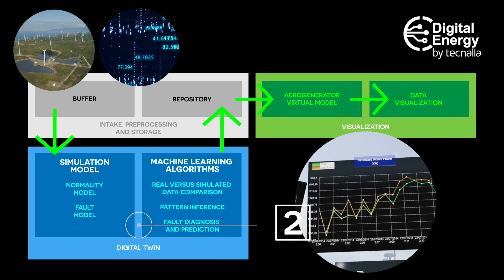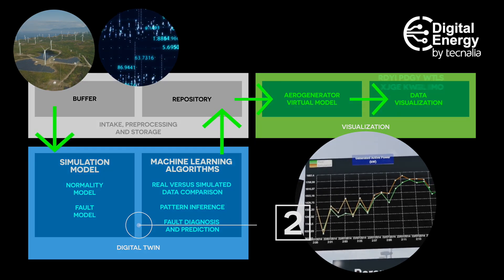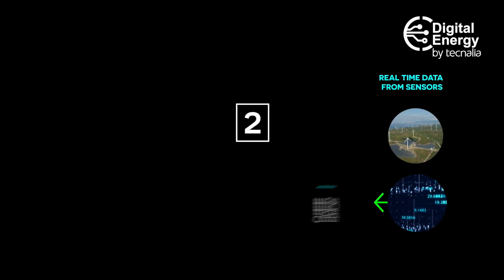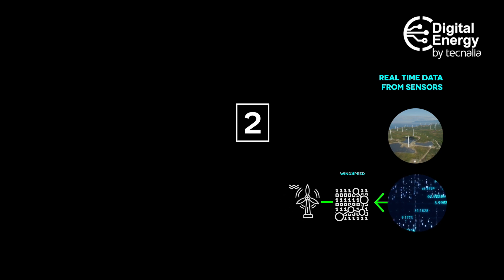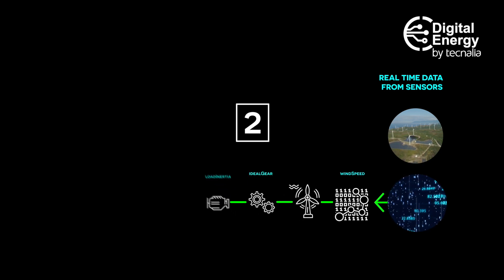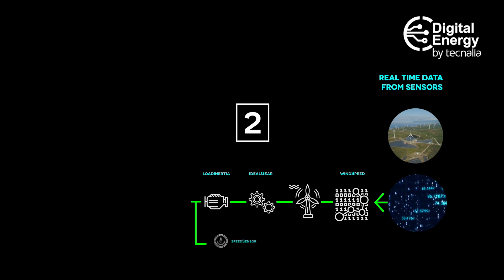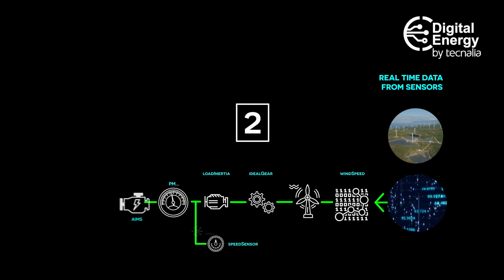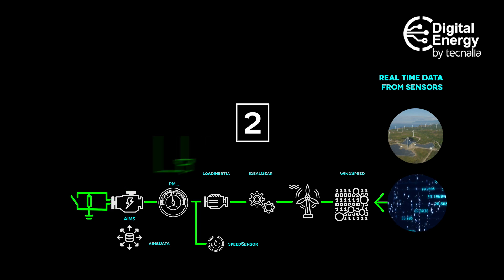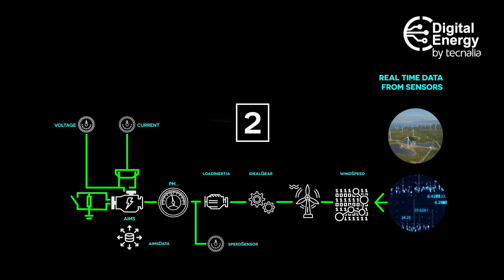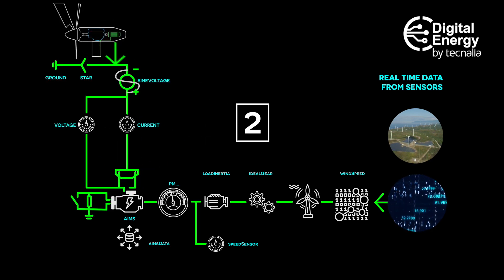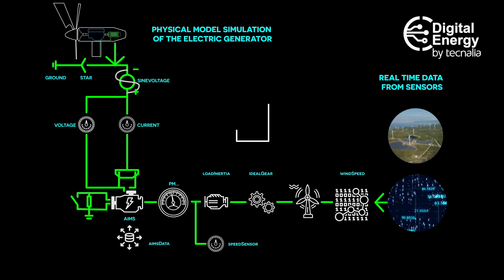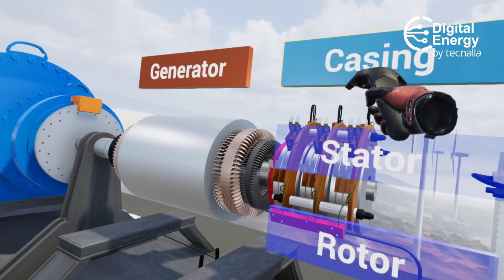Secondly, the digital twin of the electric generator, which integrates a physical-based model that simulates the behaviour of the asset in both normal and failure conditions, supported by machine learning algorithms that analyze the similarities and differences between simulated and real values in order to diagnose the health of the asset, predict future failures and estimate the remaining useful life.